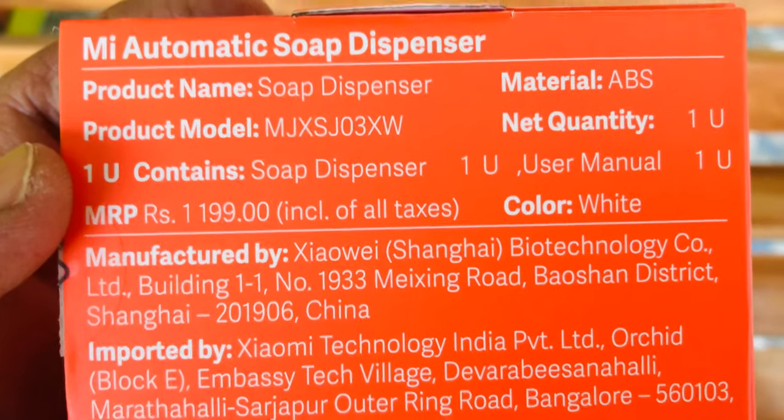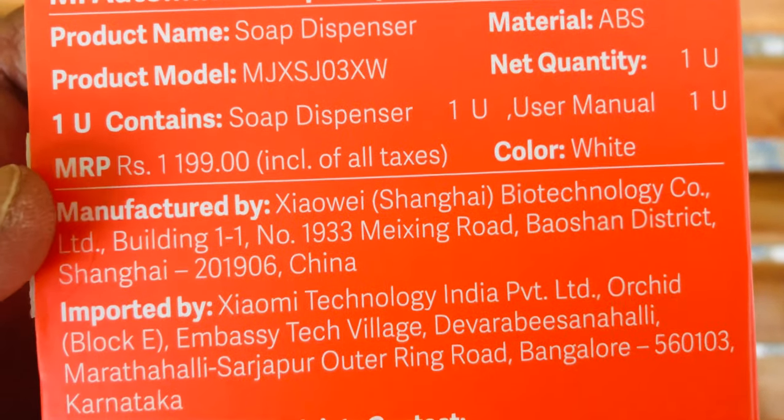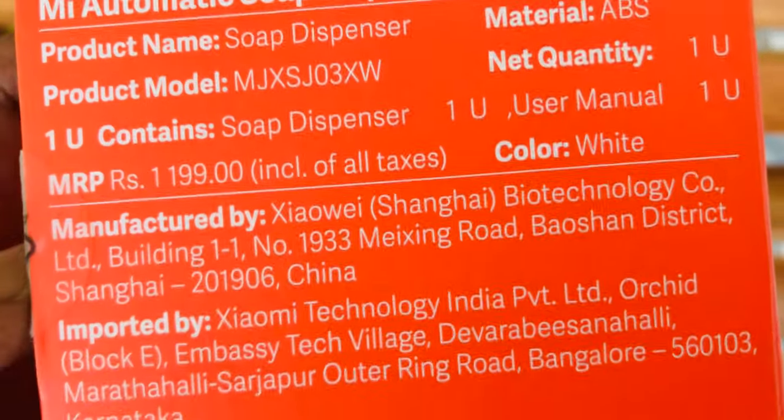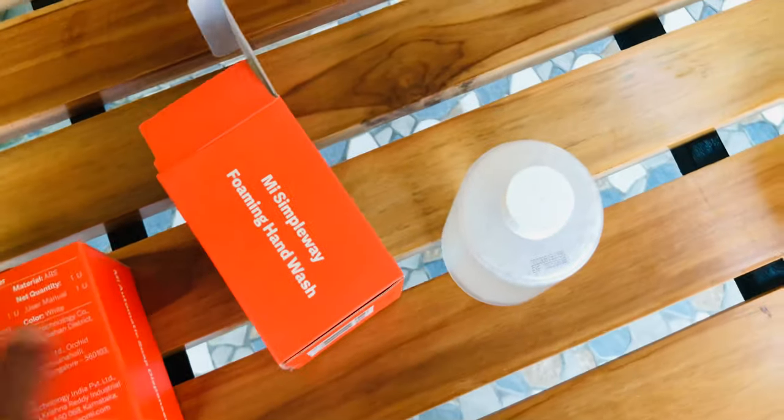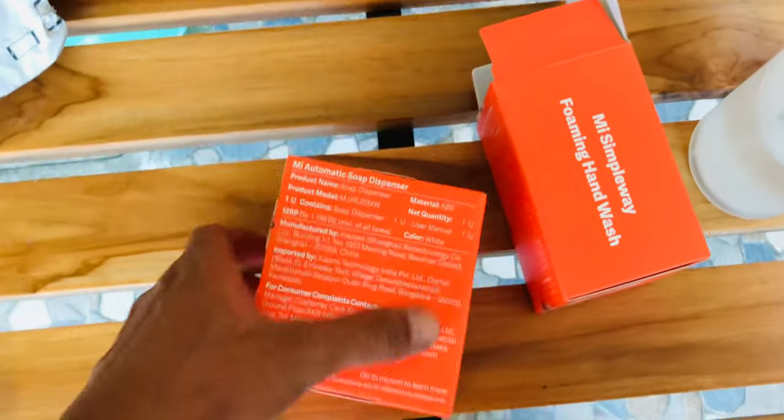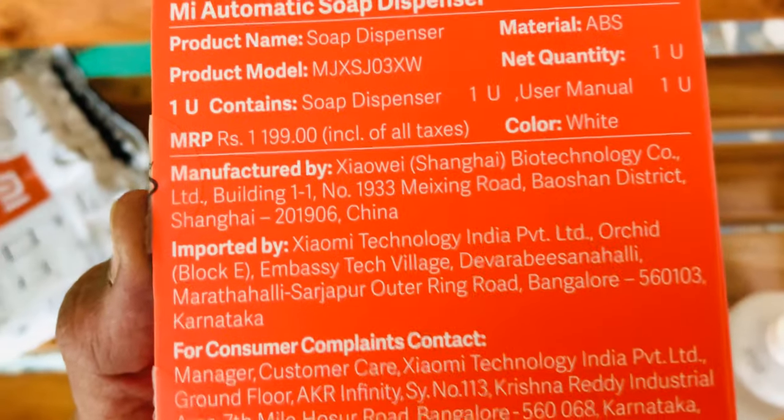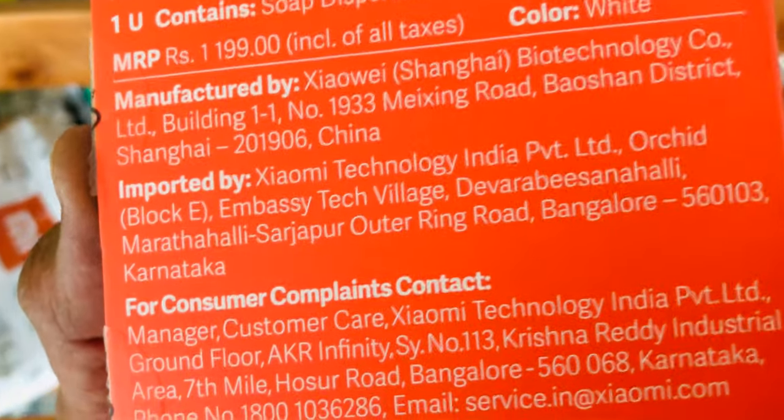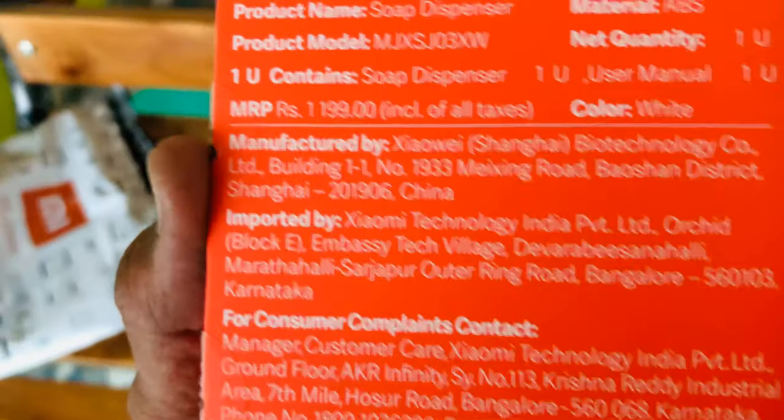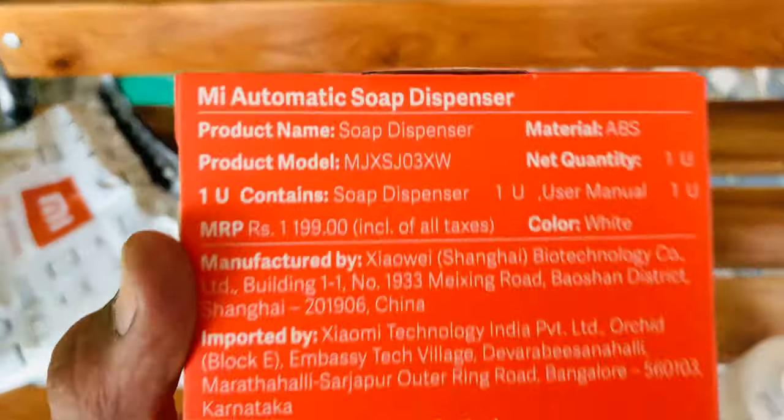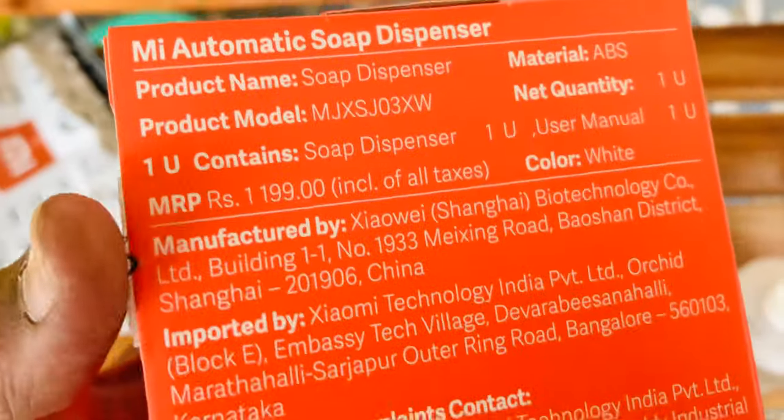The product name is Soap Dispenser and the MRP is 900 rupees. The liquid they provided is available for me as a free gift because of purchasing more products from Mi. They've changed the brand level and given a coupon code to get this liquid free when we purchase the dispenser.